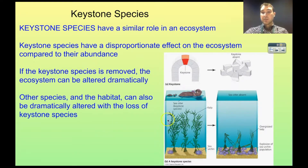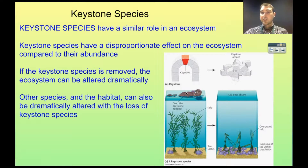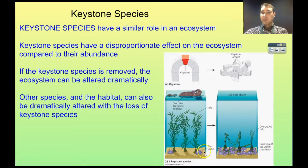Here's a good example with Sea Otters. Sea Otters are the Keystone Species in the sea kelp ecosystem in the Pacific Ocean. Kelp is a plant that grows in the ocean and is an important food source for many species. The kelp is predated upon by sea urchins.